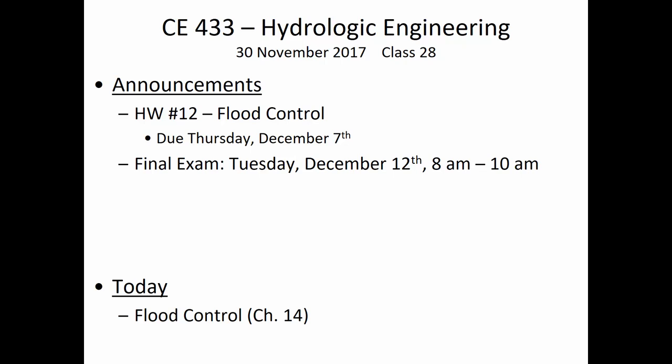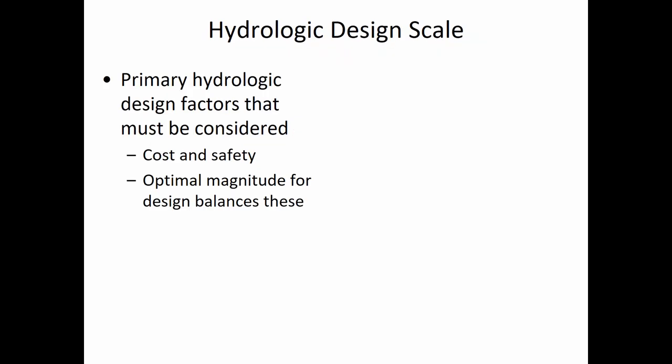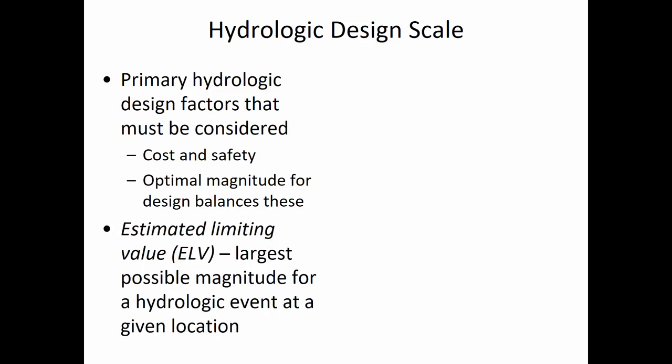With that cheerful message, let's start talking about flood control. We've been talking about storms and the size of storms in terms of their return period. A five-year storm is one that on average has a recurrence every five years. Another way of thinking about it is that in any given year there's a 20% chance of a storm of that size occurring. But sometimes we move beyond that way of assessing the magnitude of a storm depending on what kind of infrastructure we're trying to protect. For structures where the consequences of failure would be catastrophic, we move beyond the 10-year, 100-year, 200-year storm scale and consider something known as the estimated limiting value.